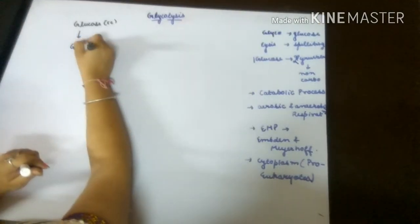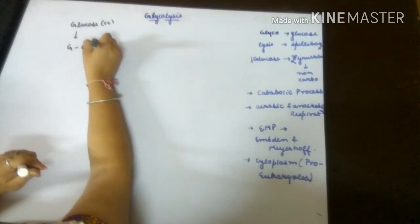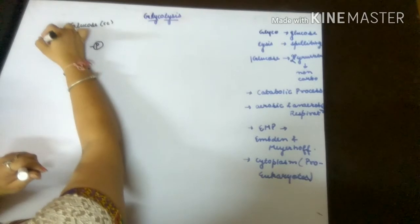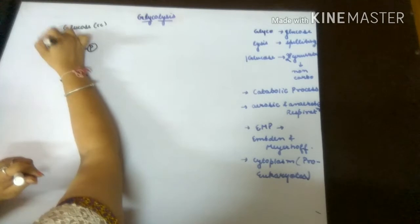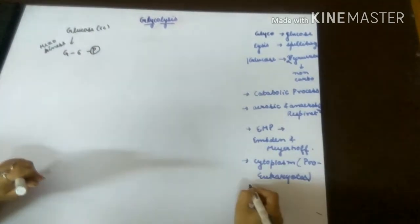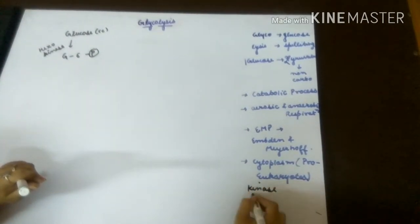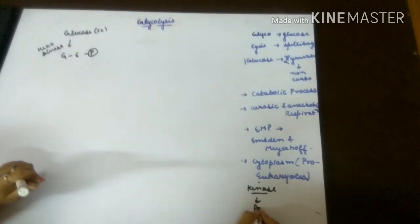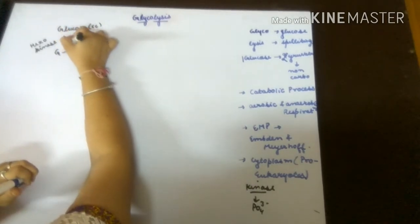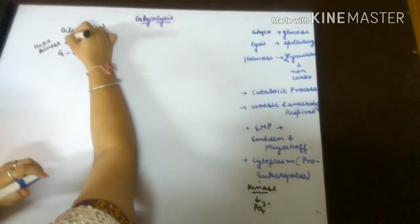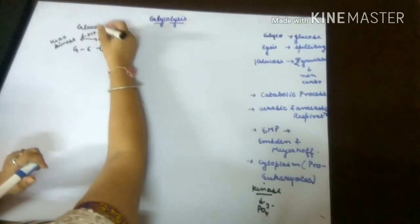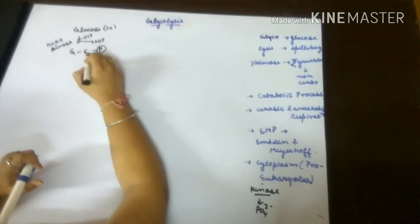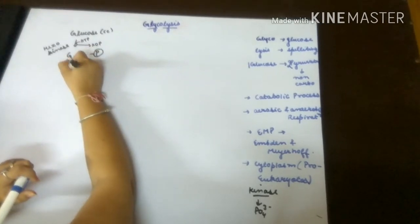So let's begin with glycolysis. Glucose, a six-carbon sugar, is converted into glucose-6-phosphate with the help of enzyme hexokinase. We use the word kinase when we add a phosphate group. ATP is converted into ADP, and this phosphate is taken by the glucose molecule.